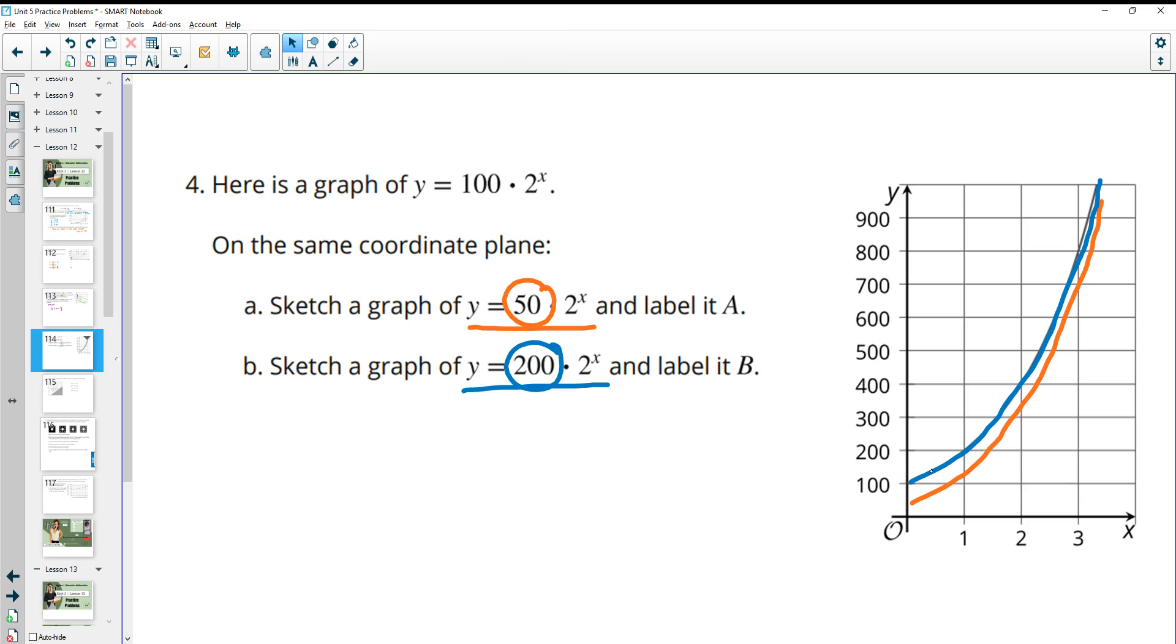But now it's starting at 200. So that kind of gives you an idea of what you could do. It's the same steepness as this, just up at 200 or down at 50, depending on which one we're looking at.